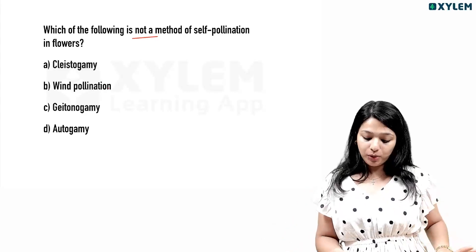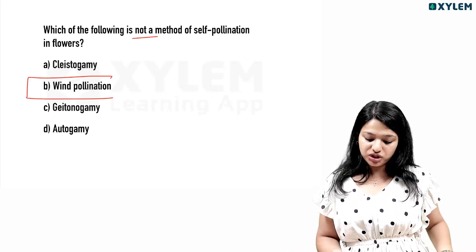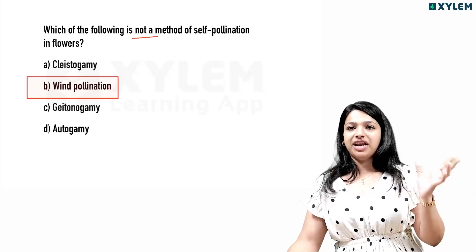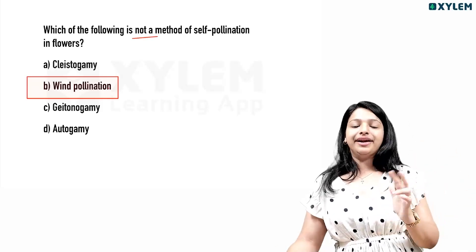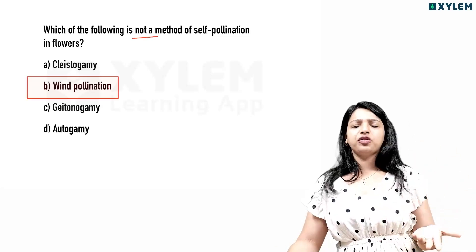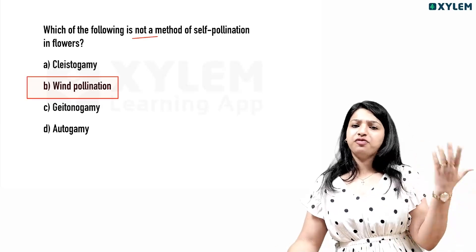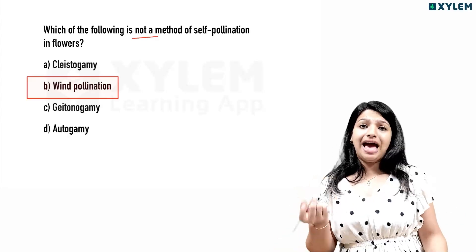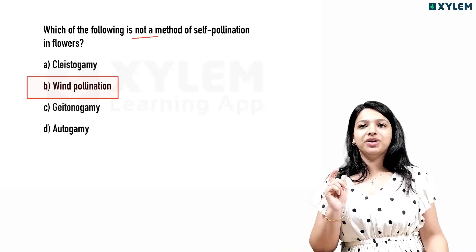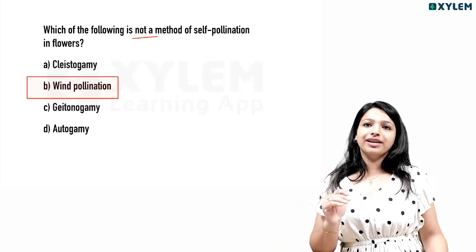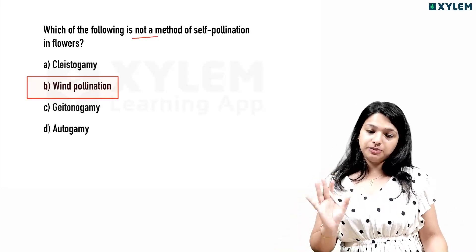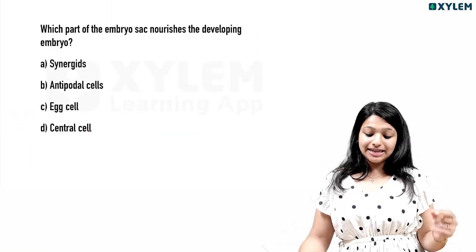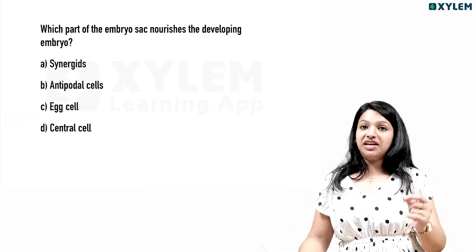Wind pollination is not a method of self-pollination. Pollination between two different plants is also not a method of self-pollination. Which part of the embryo sac nourishes the developing embryo?